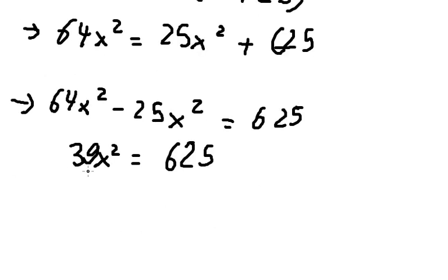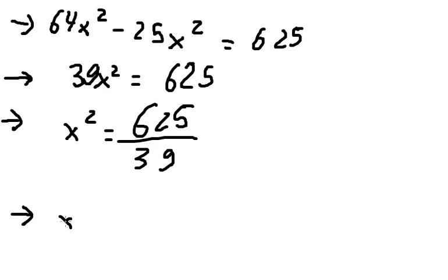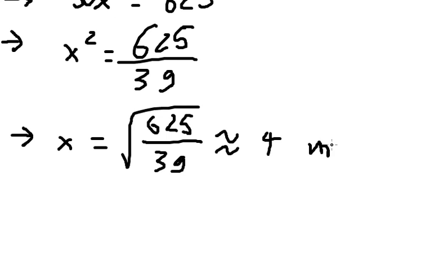Subtracting 25s squared from both sides gives 39s squared equals 625. Taking the square root of both sides, s is approximately four miles east of B. This is the answer. Thank you for watching.